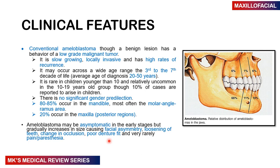Regarding clinical features of the conventional ameloblastoma: even though it is a benign lesion, it behaves like a low-grade malignant tumor. It is slow-growing, locally invasive, and has high rates of recurrence. It occurs across a wide age range — third to seventh decade — with most patients between 20 to 50 years. It is rare under age 10 and uncommon between ages 10 to 19, though about 10% of cases arise in children.